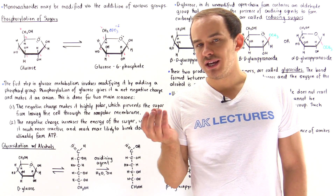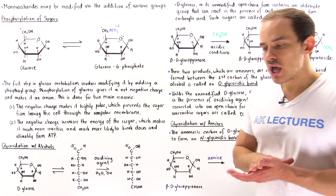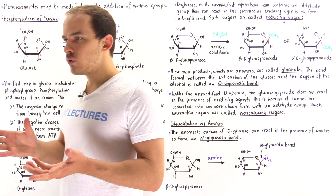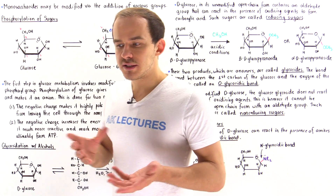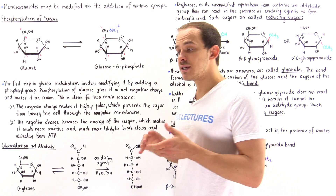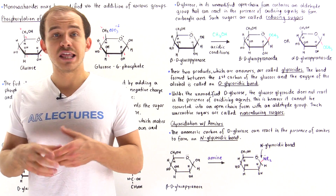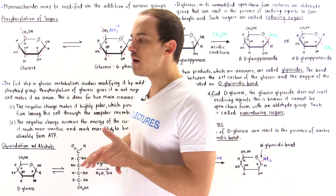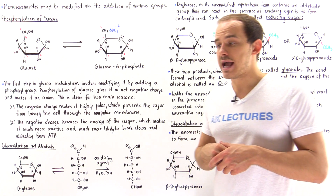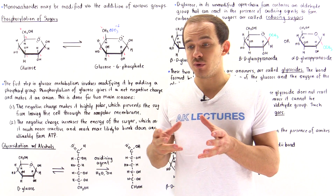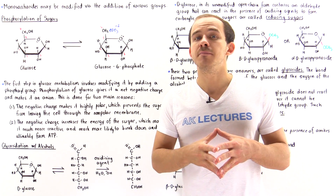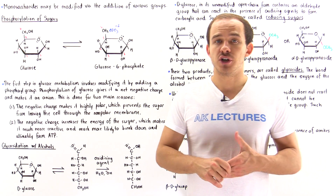Carbohydrate molecules — individual monosaccharides — can be modified in a variety of different ways by our cells. Generally speaking, why would our cells want to modify sugar molecules? Well, by modifying sugar molecules, the cells can actually change and alter the properties and functionalities of sugar molecules, and this is crucial in many different processes that take place inside our body. One very important process in which we modify sugar molecules is glucose metabolism.